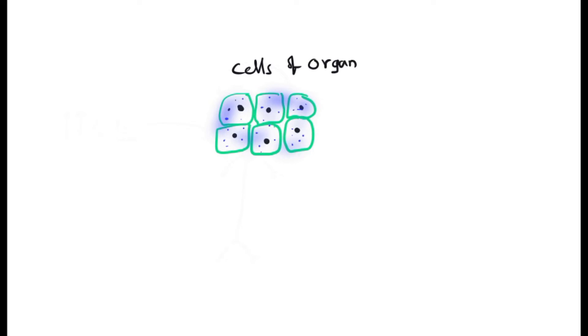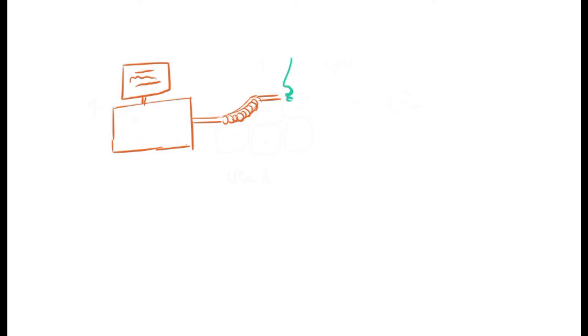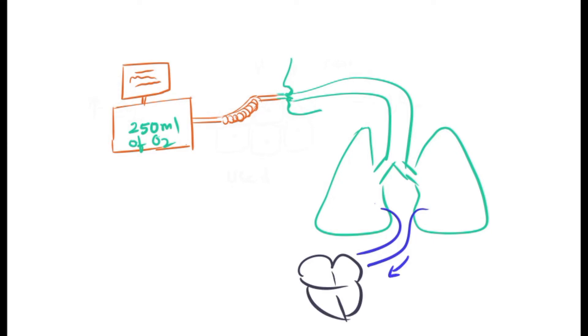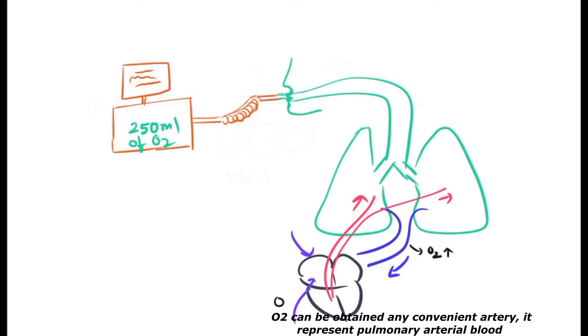Fick proposed a theory in which an organ or entire body utilizes a given amount of oxygen, measured from the artery and also measured in the veins at their respective concentrations. On the basis of these concentrations, we can calculate the cardiac output according to Fick's principle. In this illustration, the known amount of oxygen being given to the individual per minute is assessed.